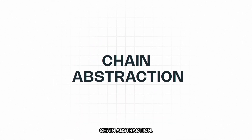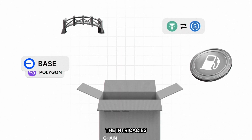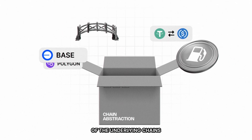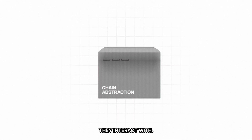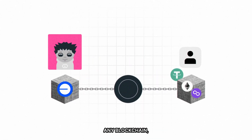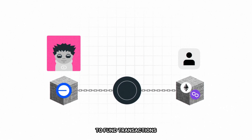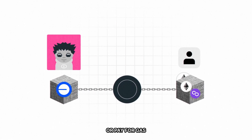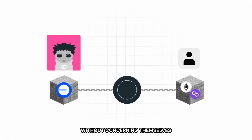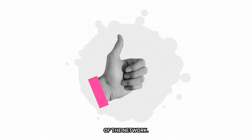Introducing Chain Abstraction. Chain Abstraction removes the need for users to manage or even understand the intricacies of the underlying chains they interact with. With Chain Abstraction, users can operate across any blockchain, using any token to fund transactions or pay for gas fees on any chain, without concerning themselves with the specific details of the network.